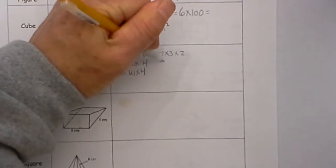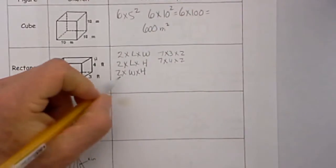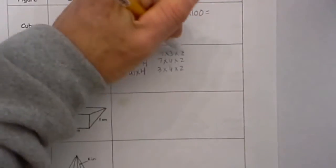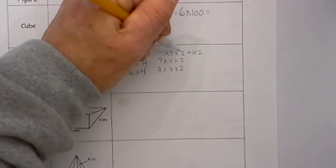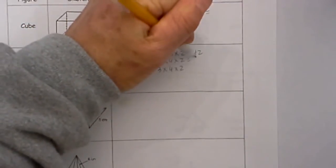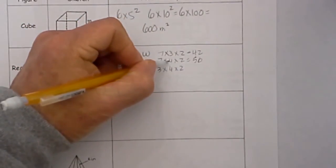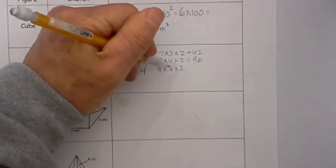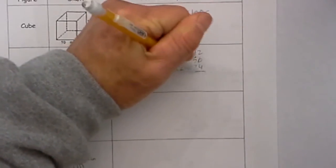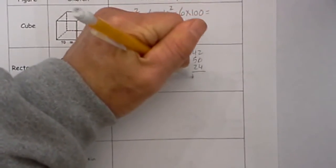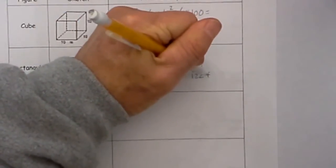Now we just plug in numbers: 2 times the length (7) times the width (3), plus 2 times the length (7) times the height (4), plus 2 times the width (3) times the height (4). So 7×3=21, times 2 is 42; 7×4=28, times 2 is 56; 3×4=12, times 2 is 24. Adding all together: 42+56+24 equals 122 feet squared.